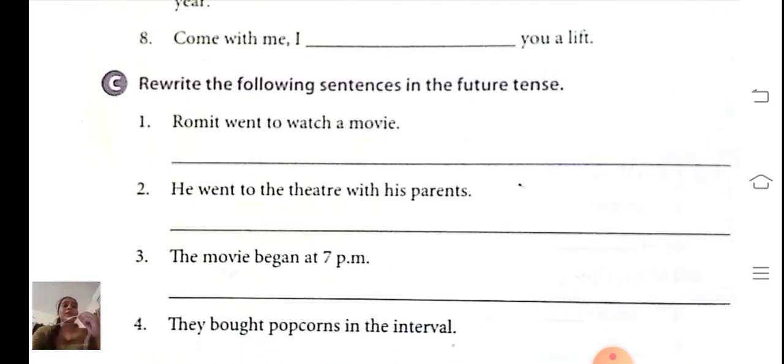Exercise C. Rewrite the following sentence in the future tense. Romit went to watch a movie. This is the past tense sentence. So we have to convert it into future tense. So what we have to do? We have to use will plus verb, main verb.